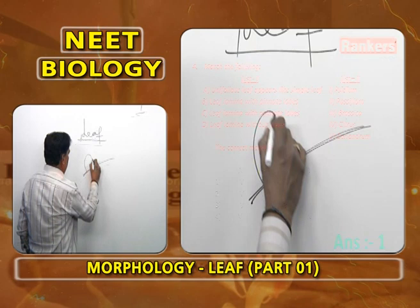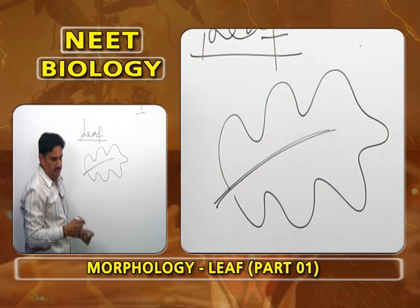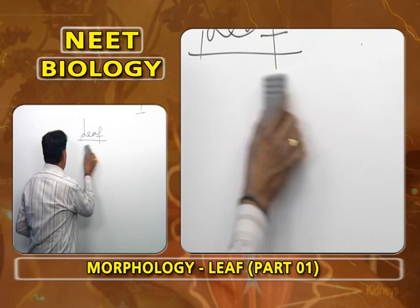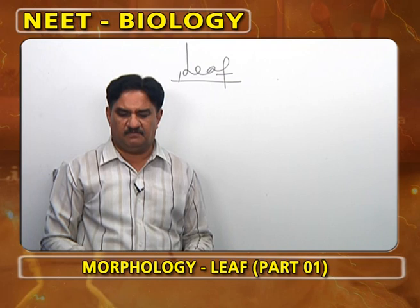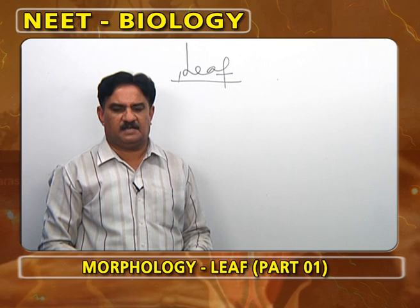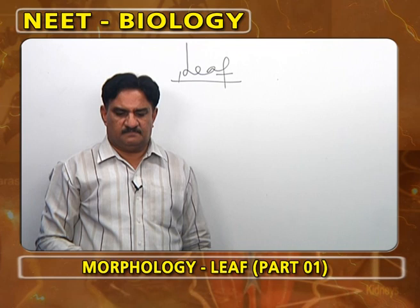For a simple leaf with pinnate lobes: the midrib is central and lobes are equal in number on both sides. Simple leaf with palmate lobes: the leaf lamina shows lobes resembling fingers in a palm, as in Passiflora. Leaf lamina without lobes means all leaves are simple without any lobes — example is Psidium.